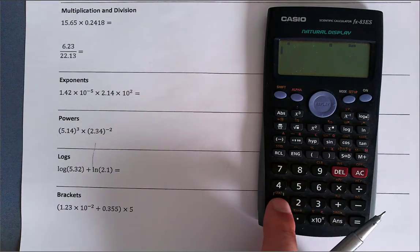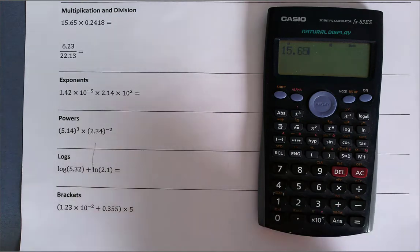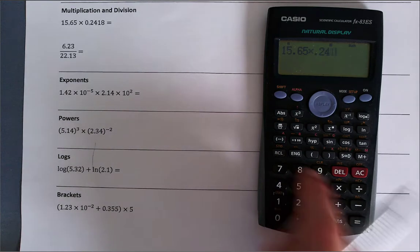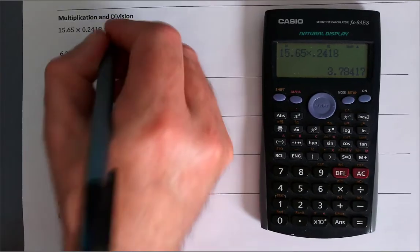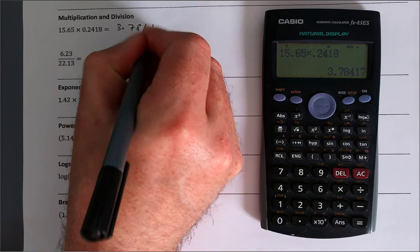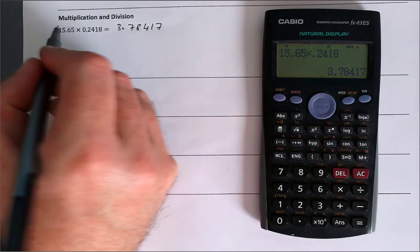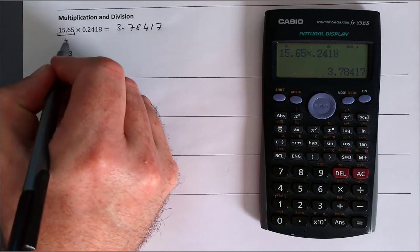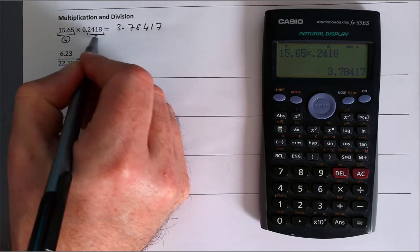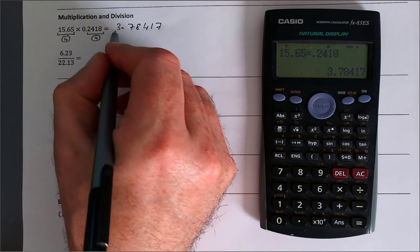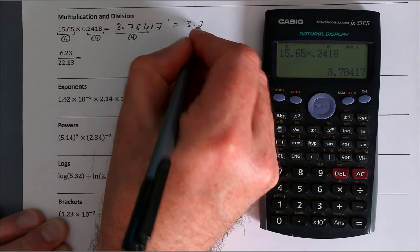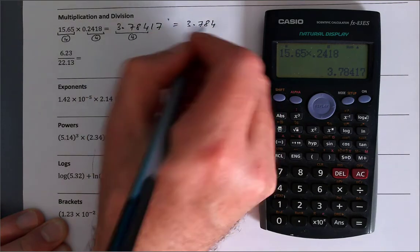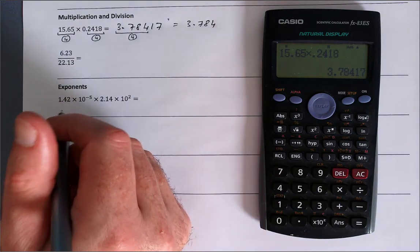Let me just turn on my calculator here. Got 15.65, this is my multiply button here, and then I've got 0.2418. It's giving me 3.78417. But we know as scientists that there are four significant figures here and four significant figures here, so we can only quote our answer to four significant figures. So I'm going to rewrite this as 3.784. The next number is one, so I leave that as a four.